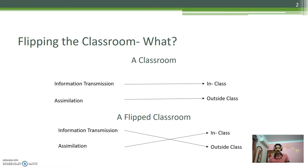In a conventional class, information transmission happens inside the classroom and problem solving generally happens at home. The information transmission is done by lecture and assimilation happens outside the classroom by means of assignment.